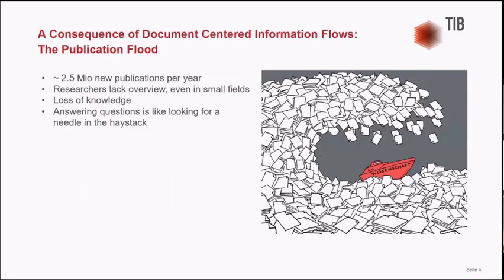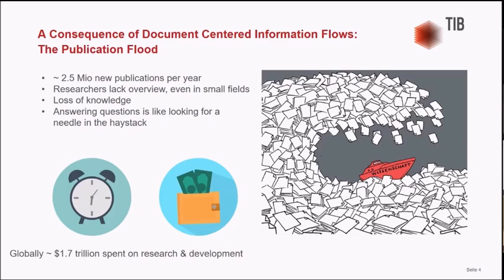I'd like to give you an overview of how much we have been into this document-centered publication, which creates the publication flood. As we all know, there is a filter selection that we need in order to look into niche fields, because more than a million publications are published. Even within a very small field, researchers could lack overview of the whole field, which results in loss of knowledge. If one wants to answer a question, it is like finding a needle in the haystack. A lot of money and researchers' time is spent creating such document-centered information flow.